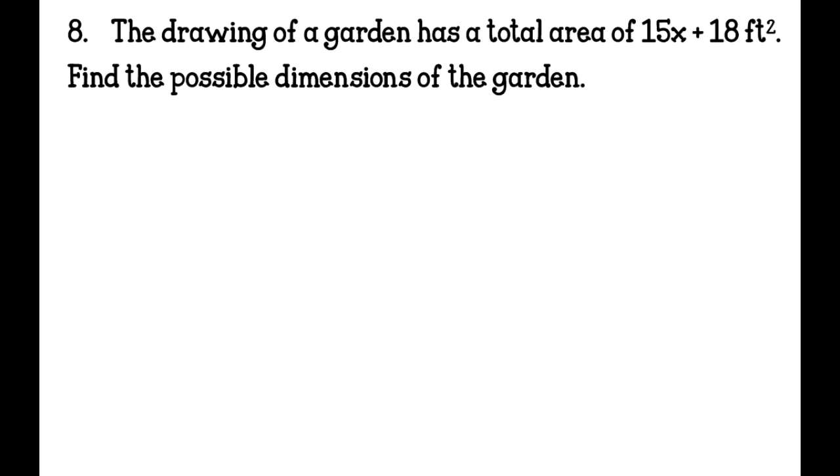Eight. The drawing of a garden has a total area of 15x plus 18 feet squared. Find the possible dimensions of the garden. So basically, this sounds really tricky, but what you're doing is you're finding the lengths of each. You're going to factor it. If you look at this, if I have a garden, and I have one side is three and one side is five, the area of that garden is fifteen because I take this times this. And when we're factoring, we're finding factors that when multiplied together equal a bigger number. So they've given us the area of the garden, but we are trying to find what would the side lengths be.